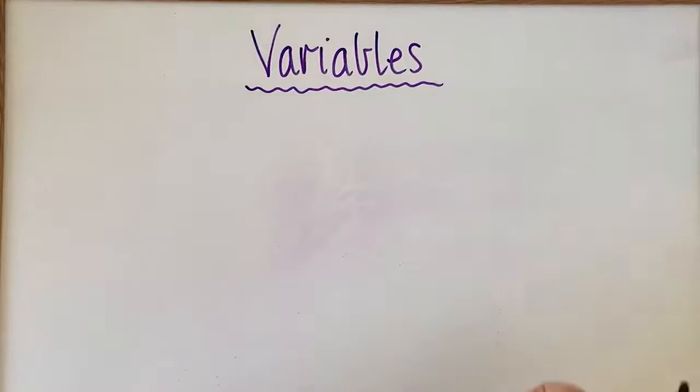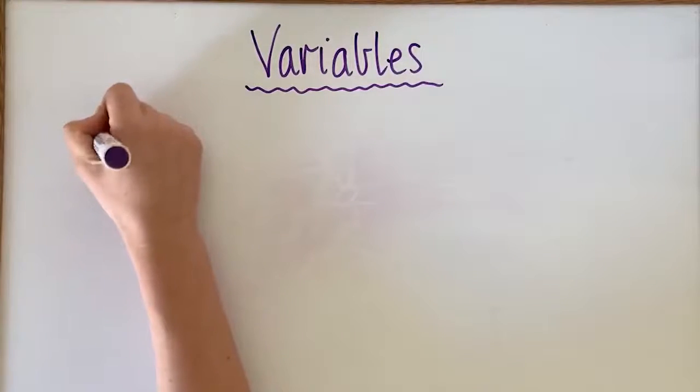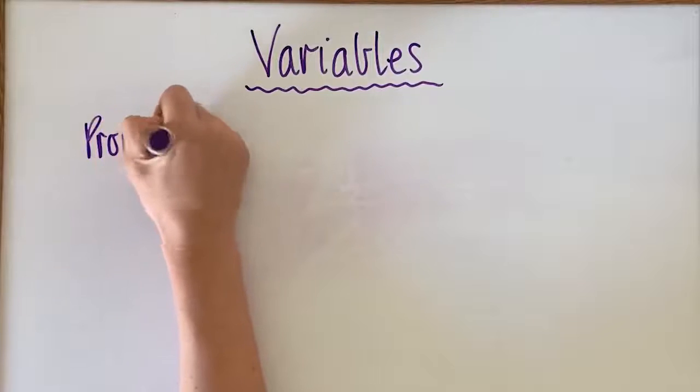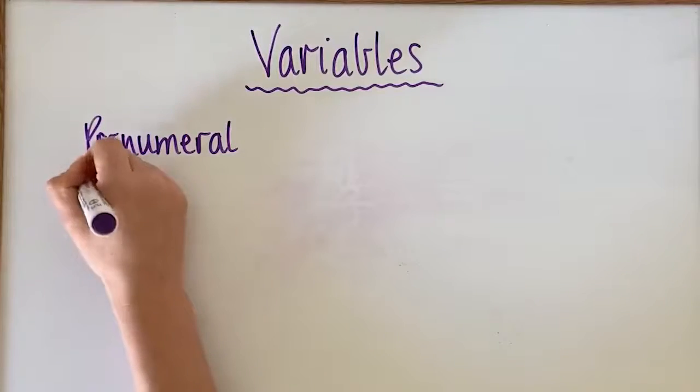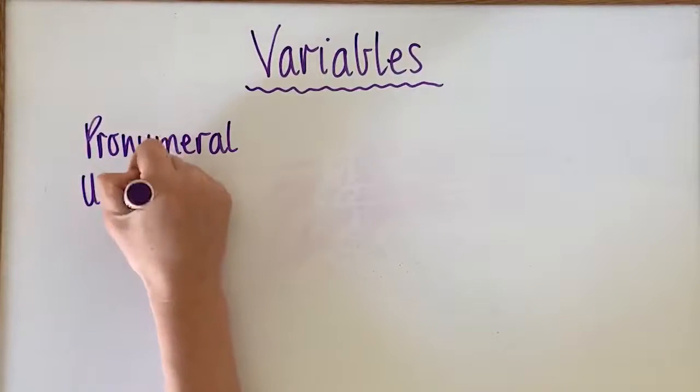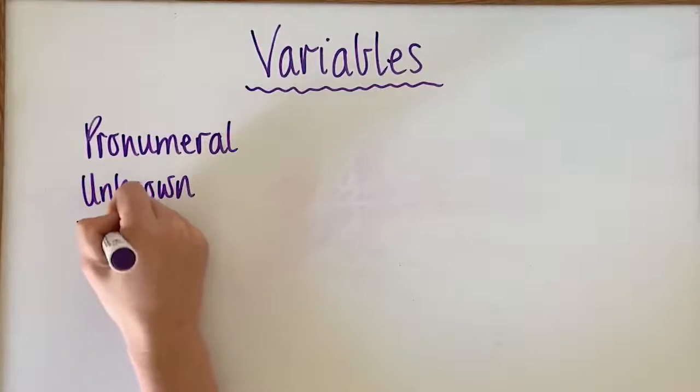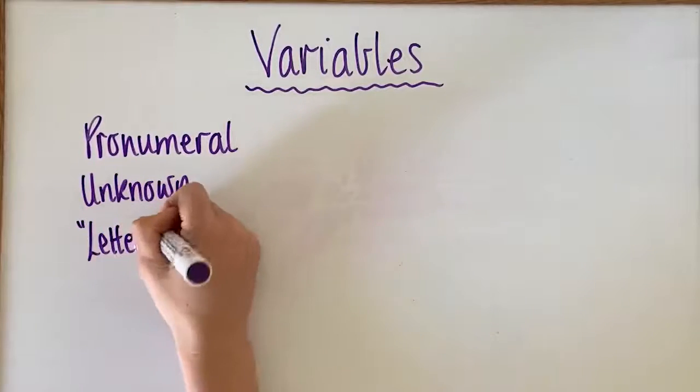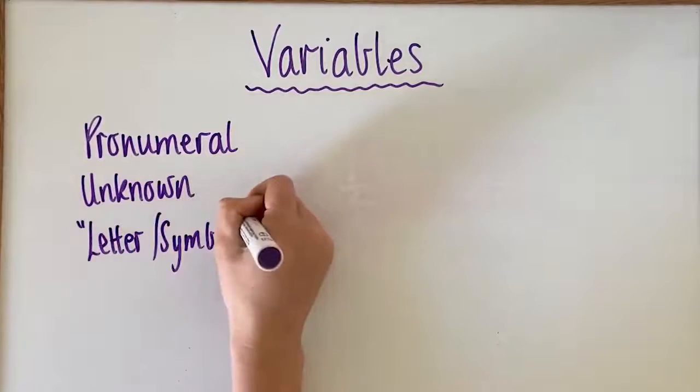In algebra, you might often hear the term variable. A variable is also known as a pronumeral, sometimes referred to as an unknown value. Really, what we're talking about is usually a letter or a symbol.